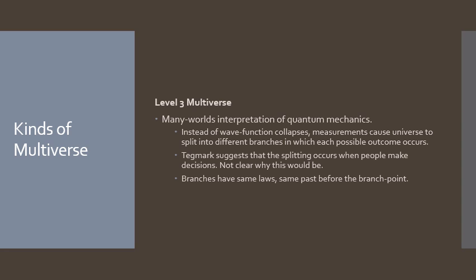In his article Tegmark suggests that the splitting would occur when people make decisions, and I'm not clear on why he says that. I think he should say it occurs when people make observations or they do a measurement on a physical system that's in a superposition for the property that's being measured. These different branches would all have the same laws of nature. They would also have the same past, that is when a branching occurs the sub-universes all have the same past and they'll just have different futures and the same laws and the same values for the parameters in the laws of nature.